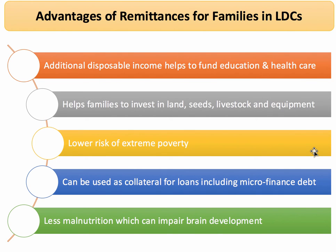What are the key advantages of remittances for families living in less developed countries? Our focus here is in lower and lower middle income nations in particular, though many of these arguments can be applied to middle income countries. First, remittances add to the disposable incomes of families, which can help fund basic education and basic health care, often for large families. In rural areas, remittance income can be a key source of money to help families invest in land, seeds, livestock, and basic farm equipment, which can then increase productivity. For some families, remittances are a major factor helping to reduce their risk of falling back into extreme poverty, and that money could be used as collateral or security for loans, perhaps from microfinance organisations.